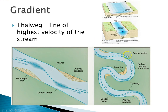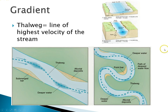As the stream moves, if you have curves in the stream, the thalweg is not necessarily down the middle. If there's a big curve — we call this a meander — the thalweg tends to be on the outer side of it, while the inside goes a little slower. We're going to see what that does in terms of shaping the river.